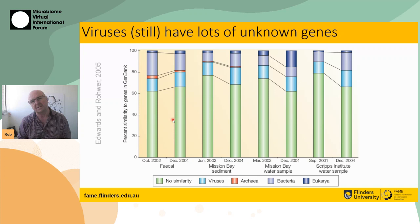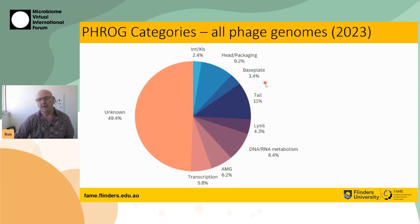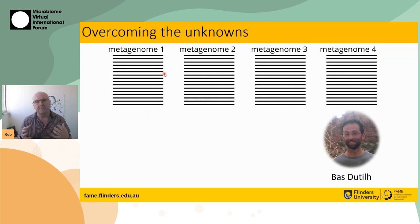This graph shows the phage genomes — from all of the phage genomes available — and we created it just a few weeks ago. It shows the PHROG categories of all the proteins in different phage genomes: integrase and excision, head and packaging, assembly proteins, lysis, auxiliary metabolic genes, transcription. But look — almost half the genes in phages, we have no idea what they're doing. And so one of the things we've been working on for a long time is how do we overcome this massive amount of unknown sequences in our datasets.